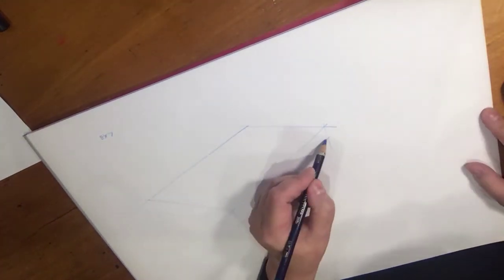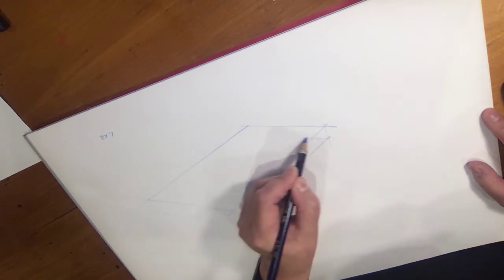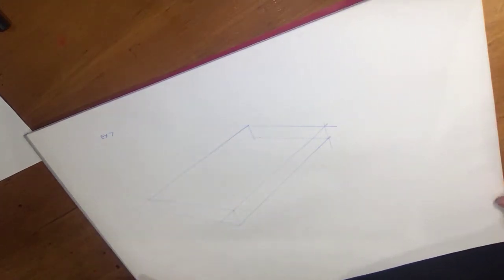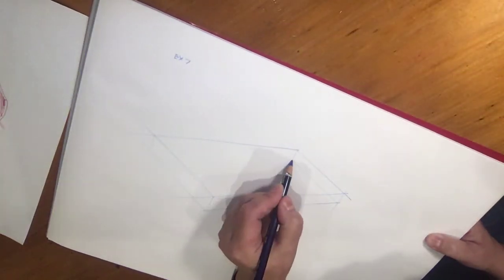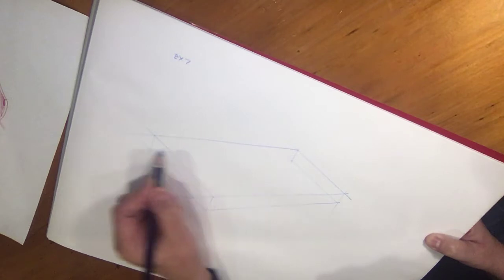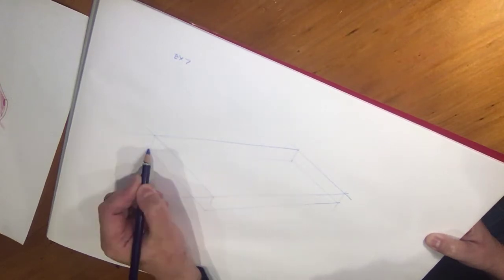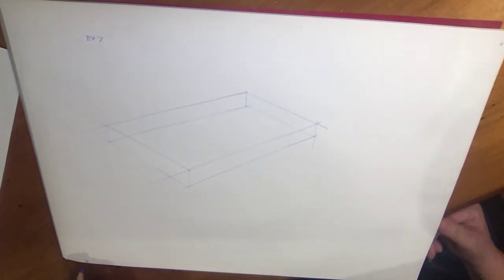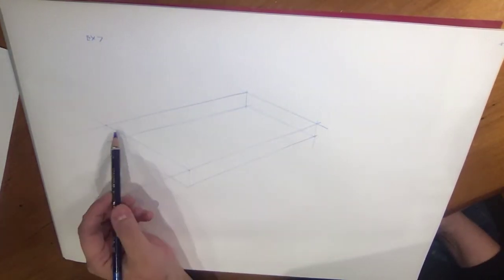Now you can keep all of these construction lines in your drawing and you can just render over the top of the blue line work. So that's my rectangular prism. Then what I want to do is divide some of these surfaces so that I can find the midpoint.